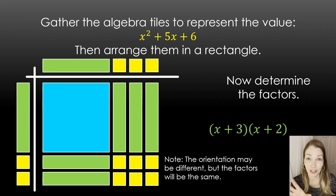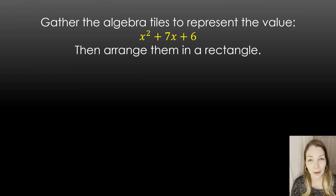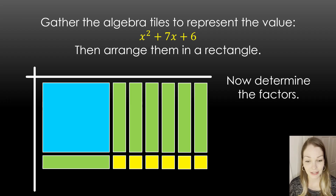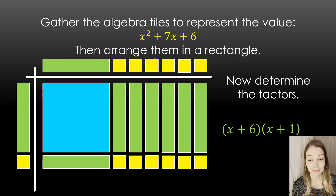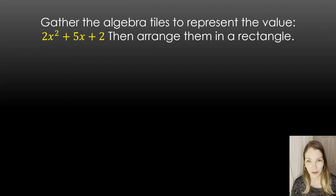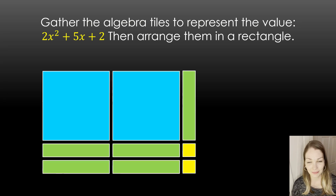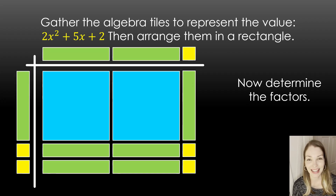It's important to know you may have switched the orientation or had your factors swapped — that's perfectly fine. With factors, the order doesn't matter. Now try this one: gather tiles for x squared plus 7x plus 6 and try to make your rectangle. Here's our arrangement — the two factors are x plus 6 and x plus 1. Let's try a trickier problem: gather tiles for 2x squared plus 5x plus 2 and make a rectangle. The dimensions — our factors — are 2x plus 1 and x plus 2.